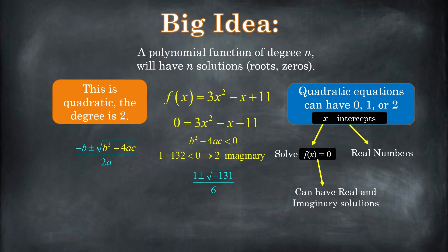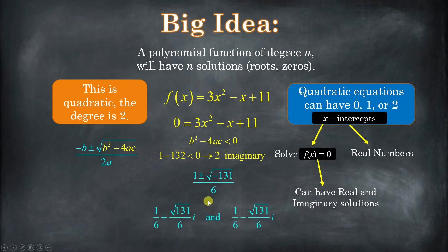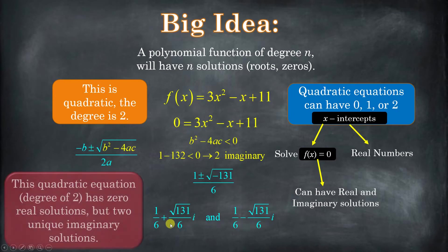The solutions are going to be 1 plus or minus the square root of negative 131, all over 6. This is a complex number — it has a real part and an imaginary part. We write it with the real part first: 1/6, and then plus or minus the imaginary part. So this quadratic equation has two solutions and they're both imaginary.